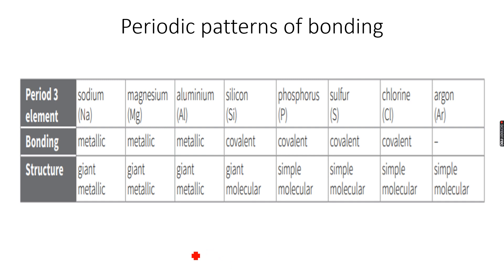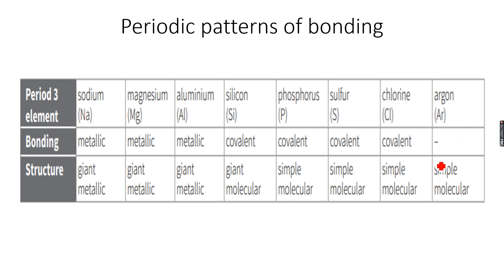The same goes for argon. However, argon is not covalently bonded because it does not bond — it's a noble gas. So we can't say anything about the bonding of argon, but what we can say is that it has a simple molecular structure.